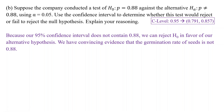Our conclusion always starts with some sort of statistical statement, and then we put the context to it. We say we have convincing evidence that the germination rate of seeds is not 0.88. Now, you can't say lower — even though the interval is lower than 0.88 and all plausible values are below it, remember your alternative hypothesis is not equal to. We always reject in favor of the alternative, so we say we have convincing evidence that the germination rate of seeds is not 0.88. If you say less than 0.88, you will not get full credit. We have to be specific with our wording.